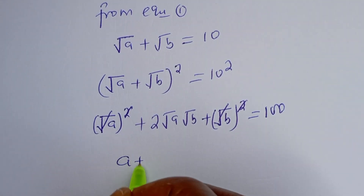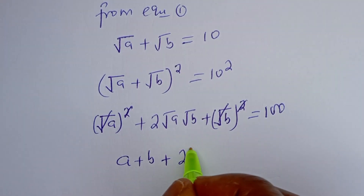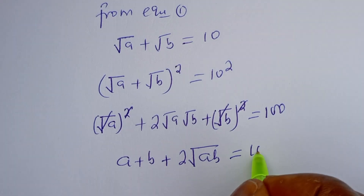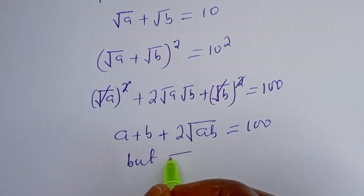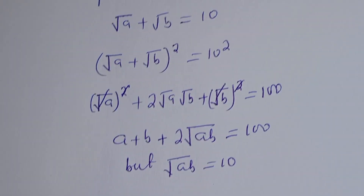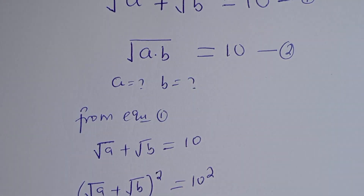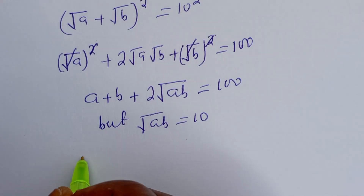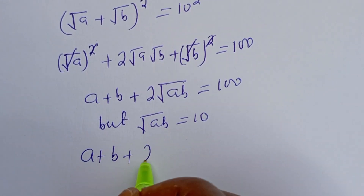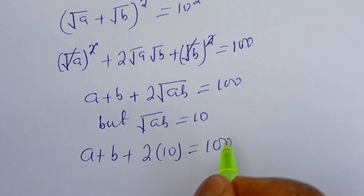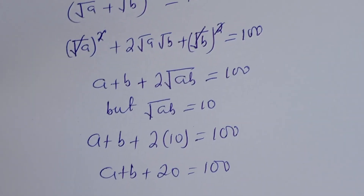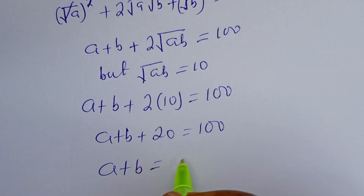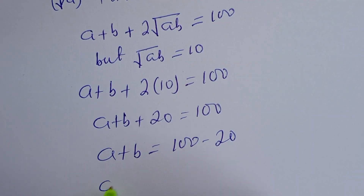Then A plus B plus 2 times root AB is equal to 100. Now, square root of AB is equal to 10 from equation 2, so root of AB equals 10. Then this becomes A plus B plus 2 times 10 equals 100. So A plus B plus 20 equals 100, meaning A plus B equals 80. Let's call this equation 3.